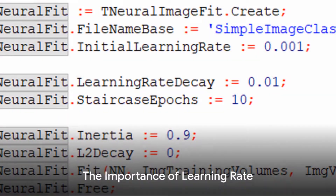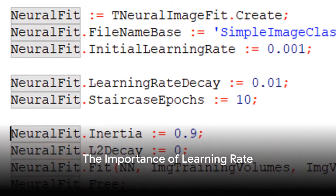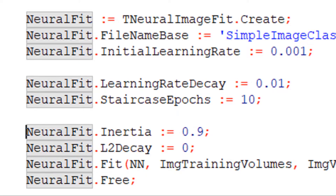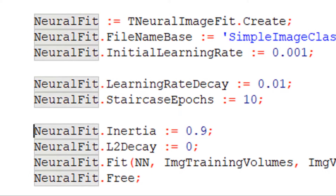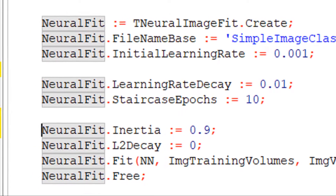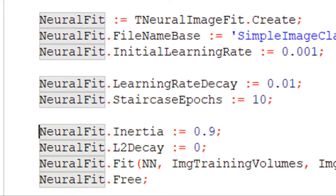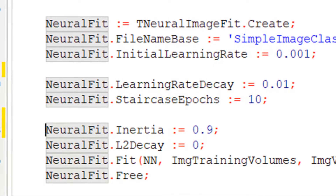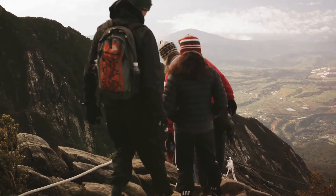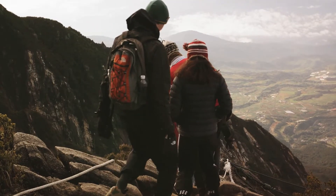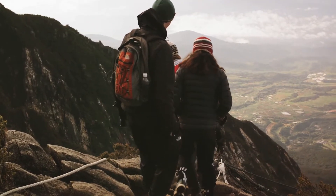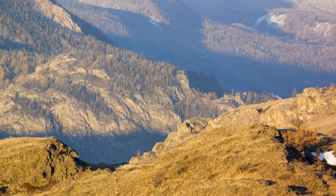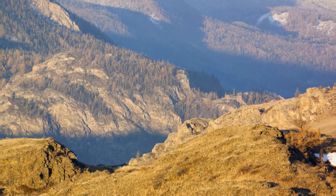The learning rate is a crucial parameter in the optimization algorithm that determines how quickly or slowly the algorithm will learn. It's the size of the steps you take as you descend into the valley. If your steps are too large, you might overshoot the valley's bottom, but if they're too small, it could take ages to reach the bottom.